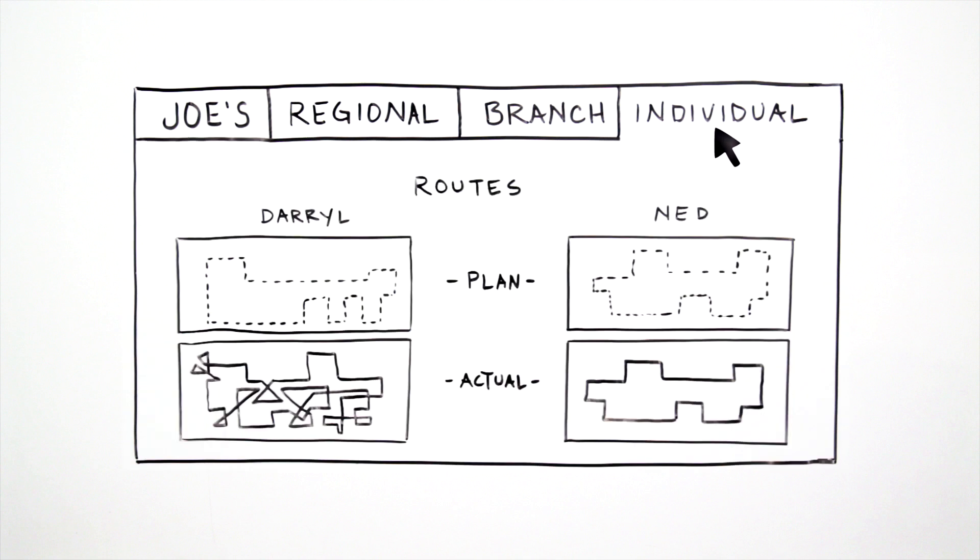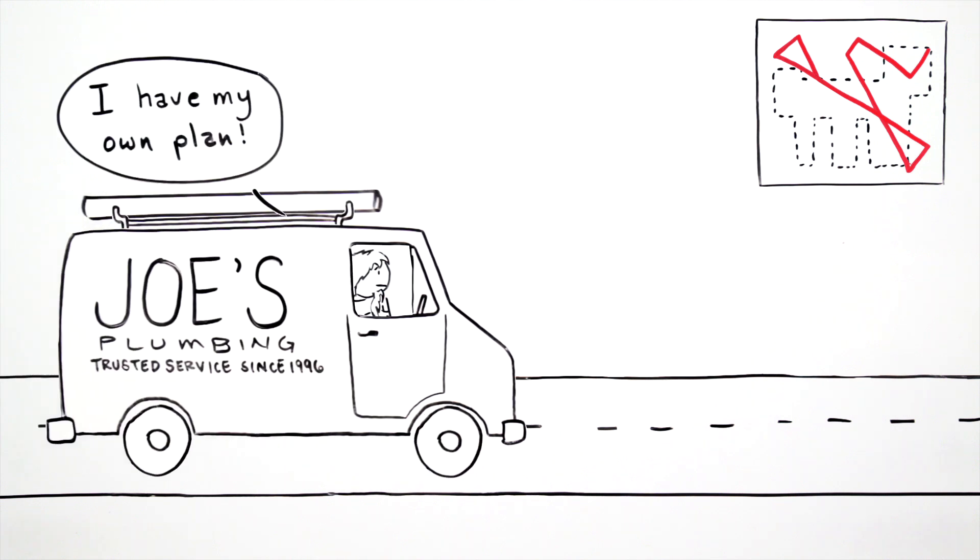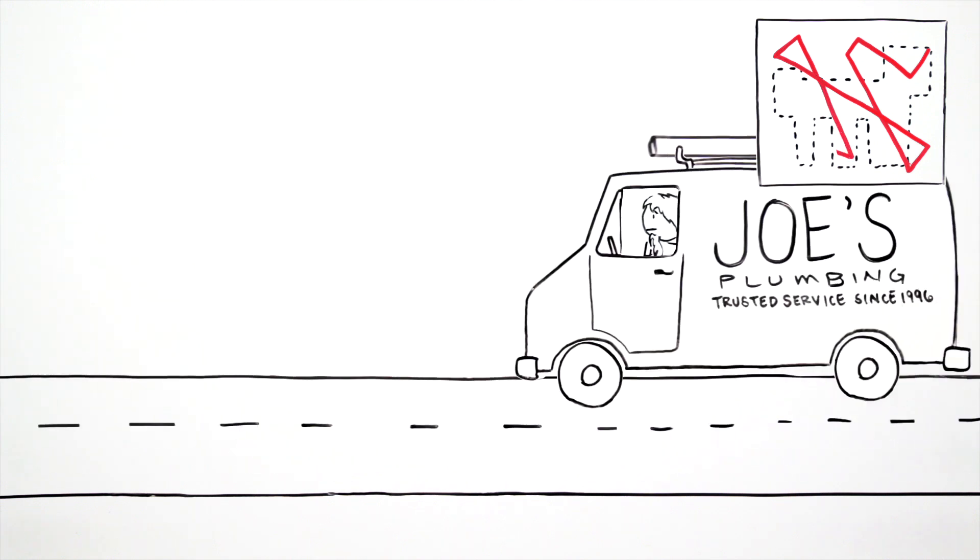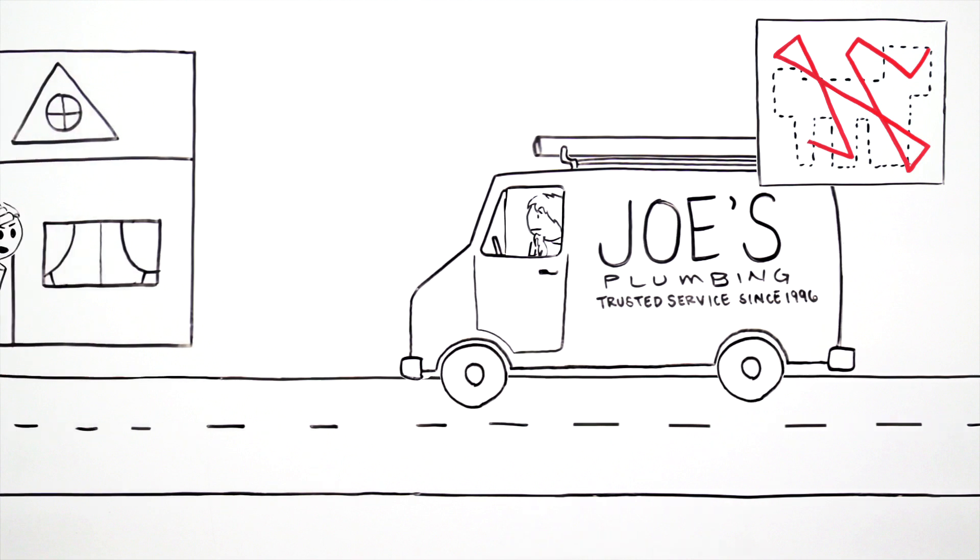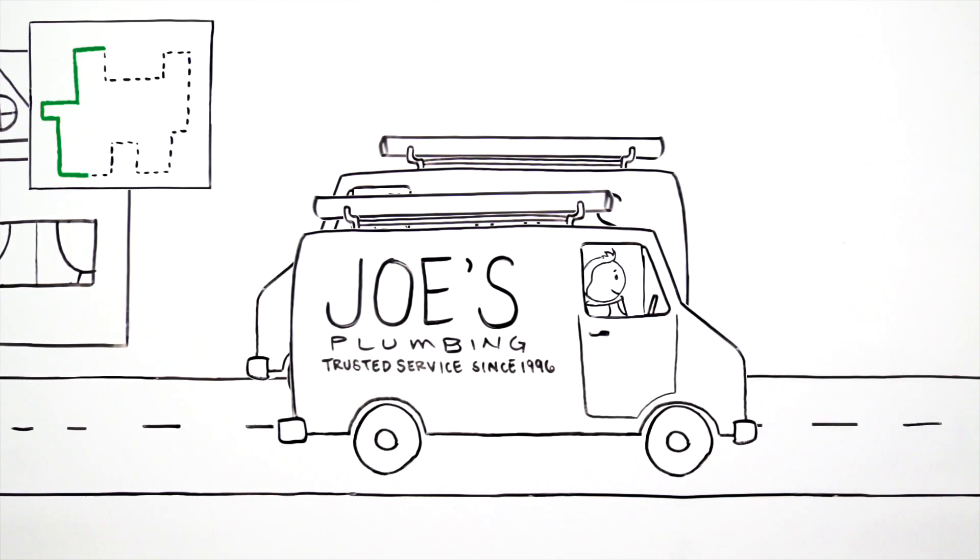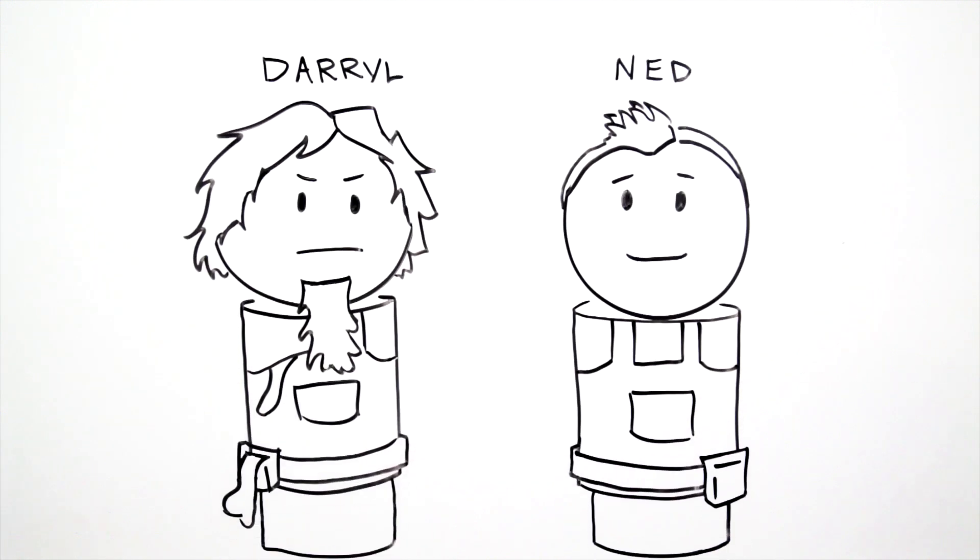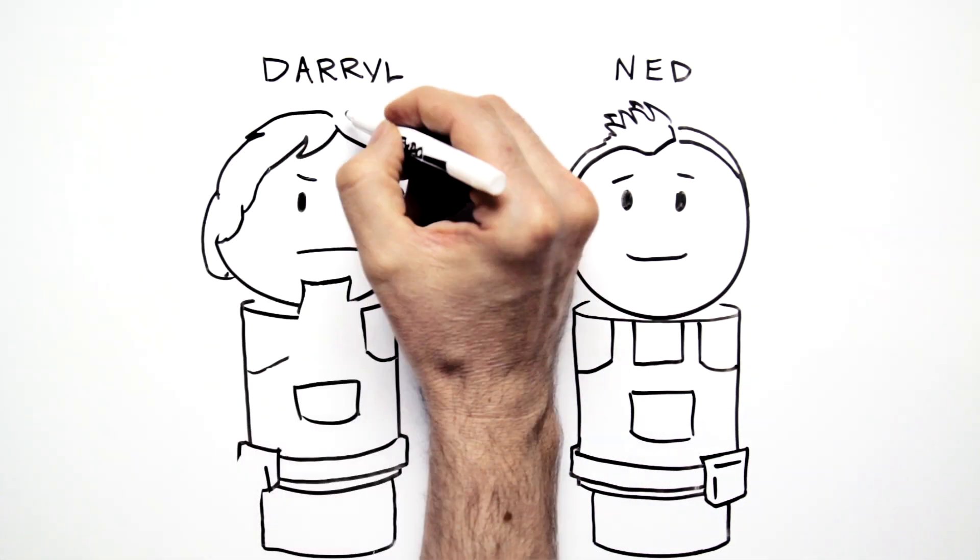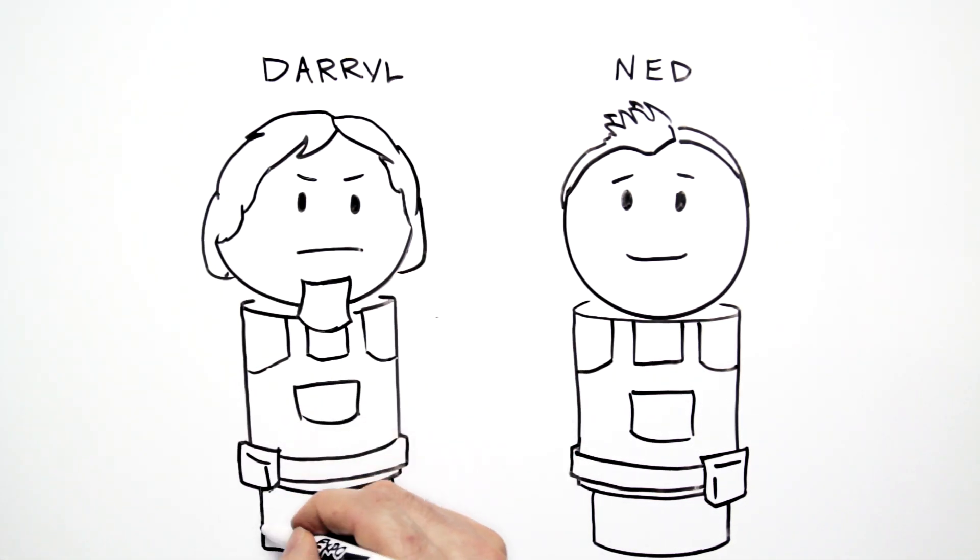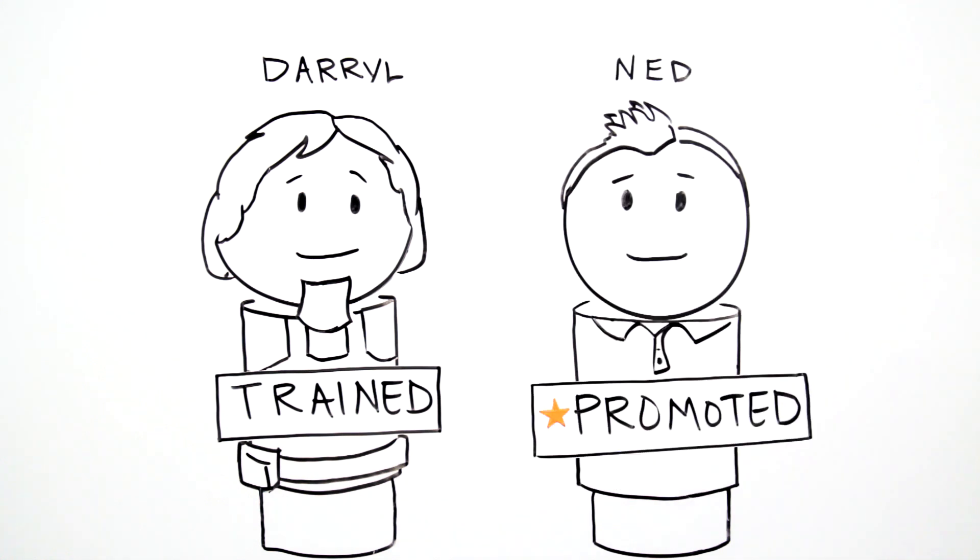Drilling down into the results, Joe spots opportunities with two of his plumbers, Daryl and Ned. Not only does Daryl take long lunches, he doesn't follow the plan and manages his time poorly. This is costing Joe extra fuel and creating unhappy customers because of missed appointments. Ned is the exact opposite and consistently delivers profitable results. With clear and actionable insights and analytics from Mobi, Joe now uses actual results to coach Daryl and reward Ned's performance, helping him to continuously improve his business.